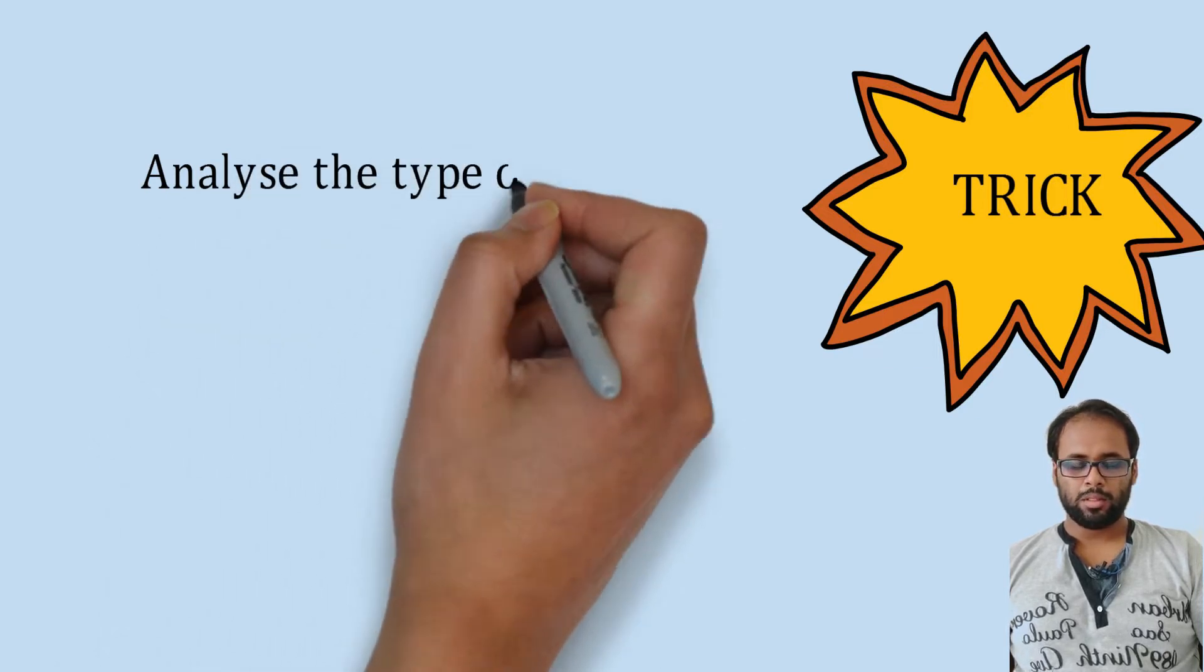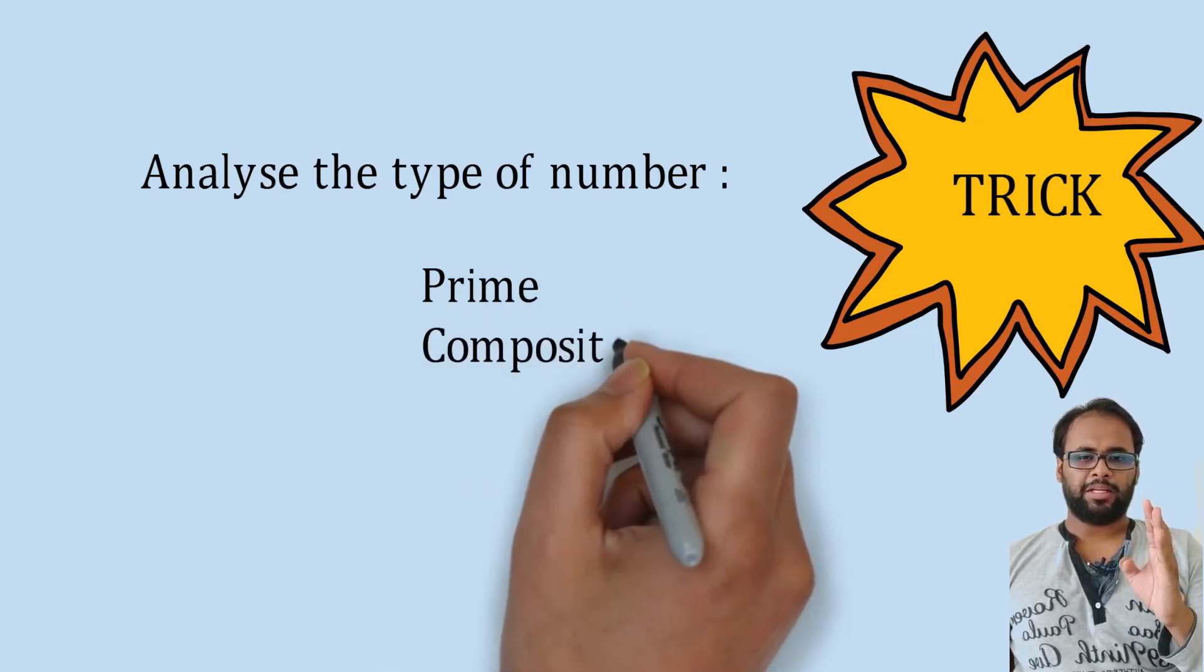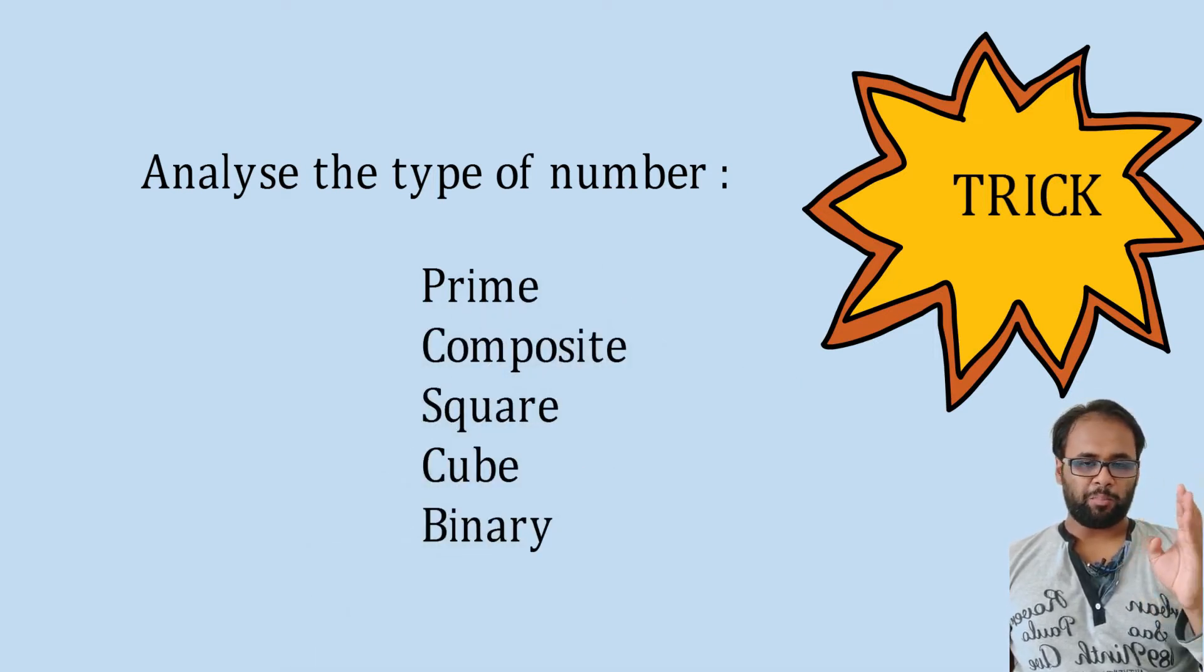The first step regarding number classification based odd one out is that numbers can be classified as prime, composite, square, cube, and binary. Prime numbers are divided only by themselves or by one. Composite numbers are those which are not prime. I strongly recommend you memorize the squares and cubes of numbers up to 30. Binary numbers are zero and one.